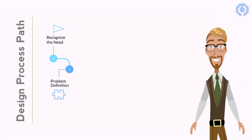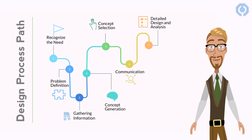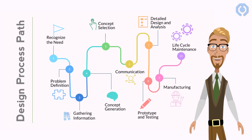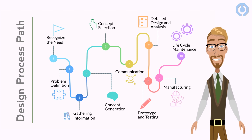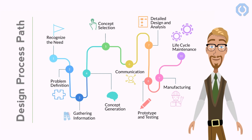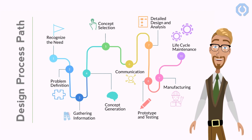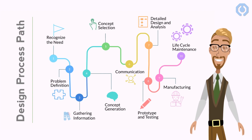We can organize the design process in ten stages. Step one is recognition of the need. Then the problem will be defined. The next step is gathering of information. Step four is concept generation, and then concept selection. We also have a communication step. Then comes detailed design and analysis. Step eight is prototyping and testing. And naturally, the manufacturing step. The last step is life cycle maintenance.